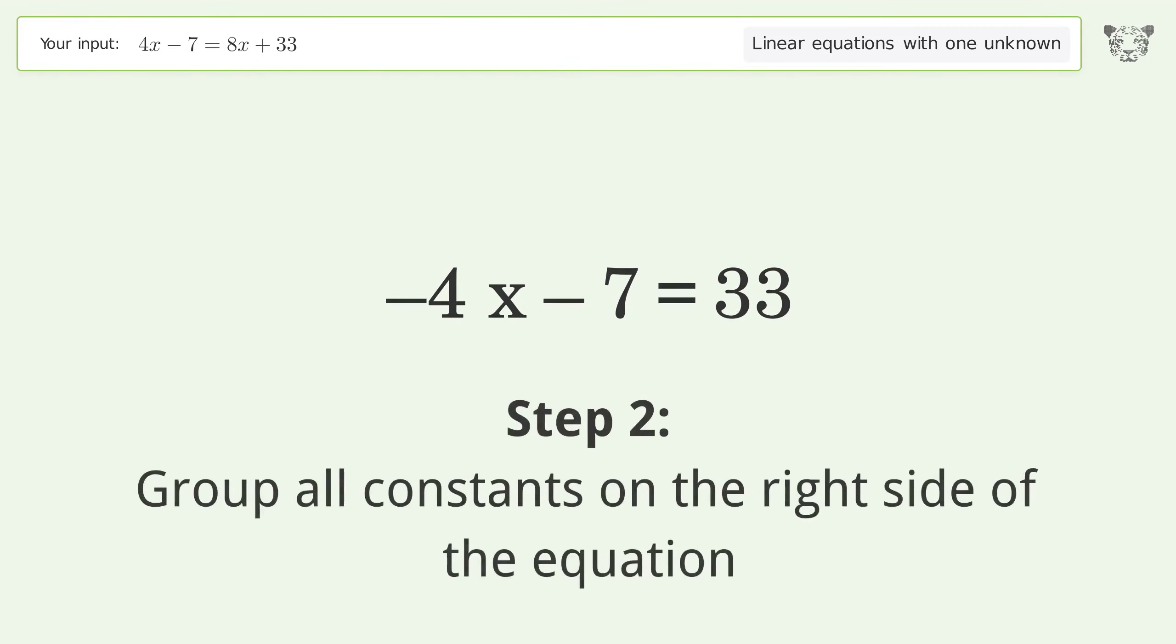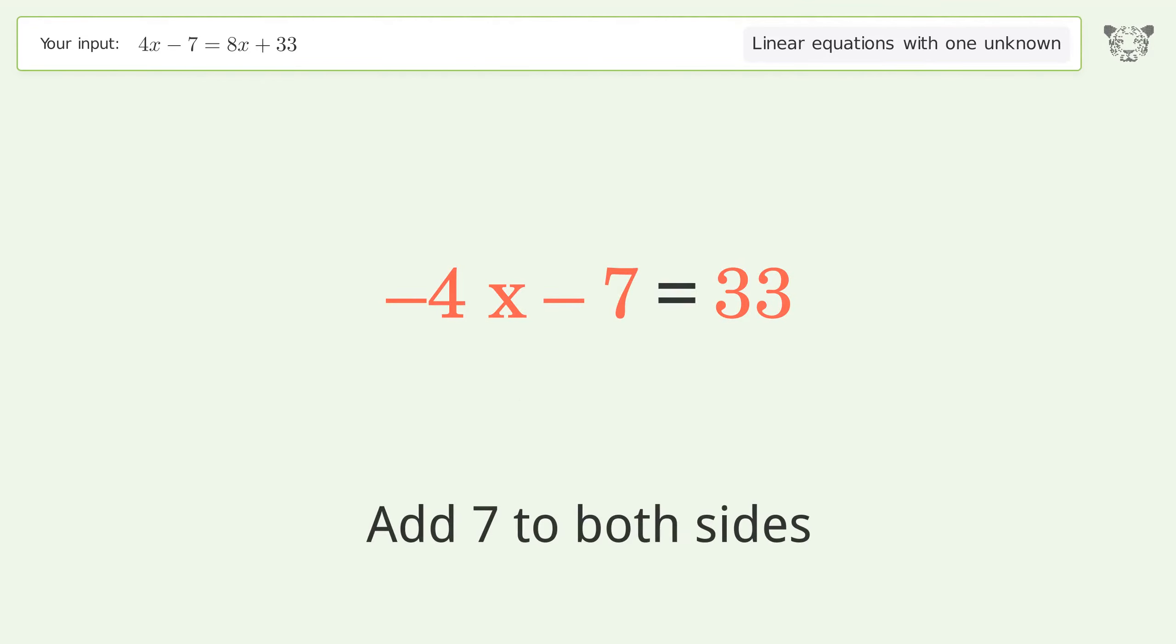Group all constants on the right side of the equation. Add 7 to both sides. Simplify the arithmetic.